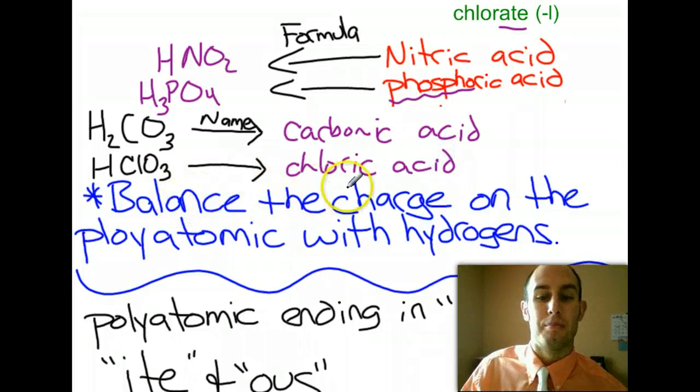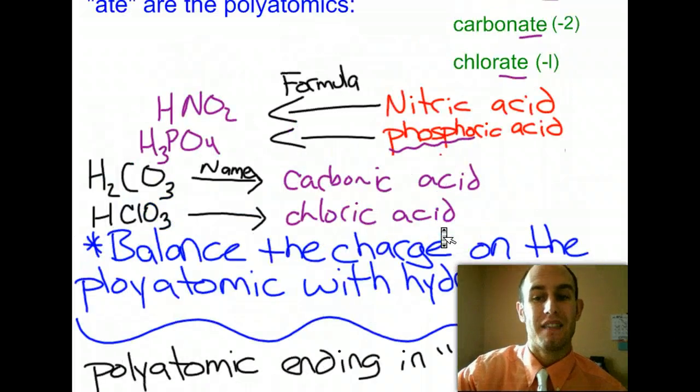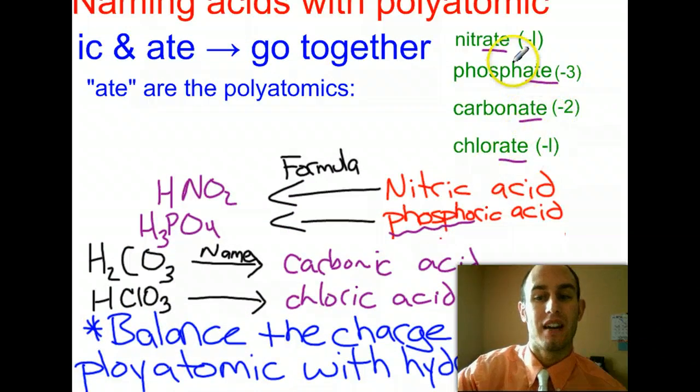So, remember, balance the charge on the polyatomic with number of hydrogens. Those are for all the -ates: phosphate, carbonate, chlorate, those examples.